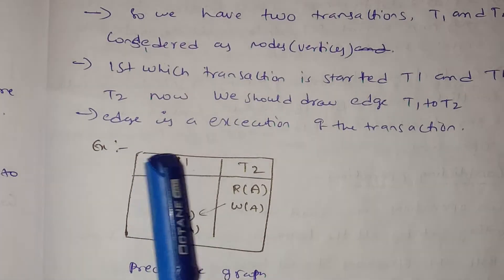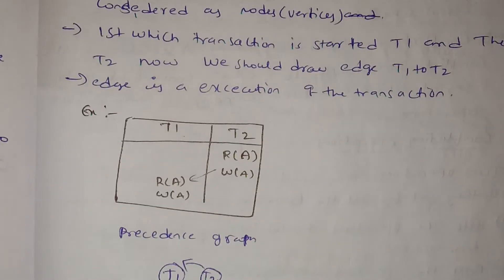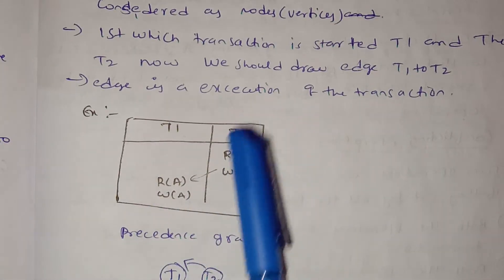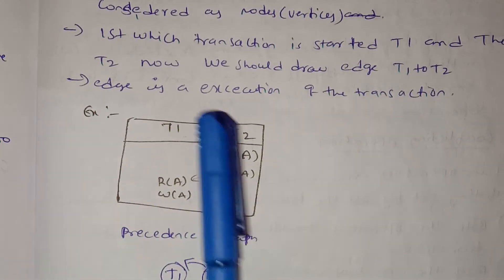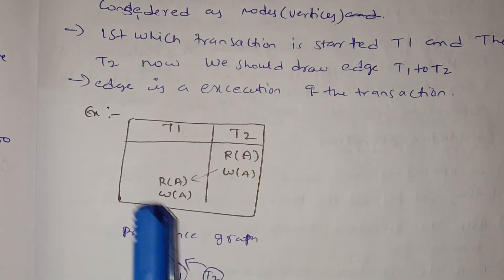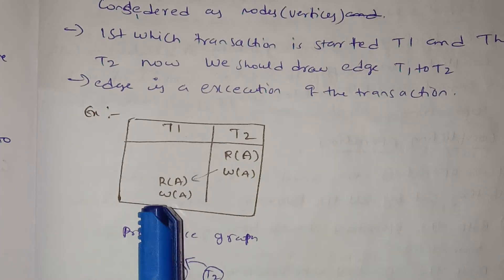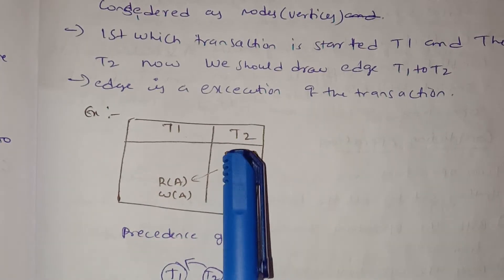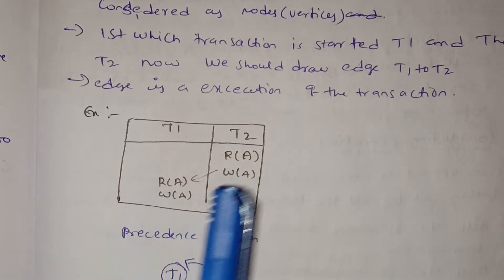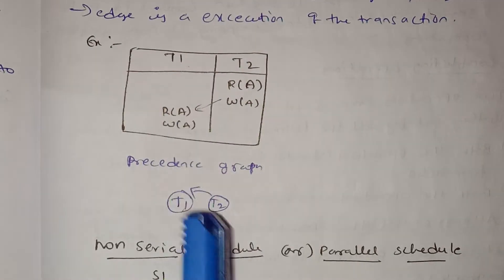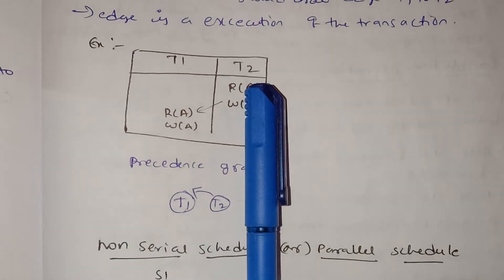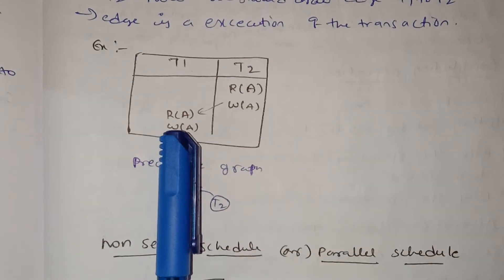Now we will show another example. In this case, transaction T2 executes first. The Precedence Graph has two vertices T1 and T2. Since T2 executes first, we draw the edge accordingly from T2 to T1.